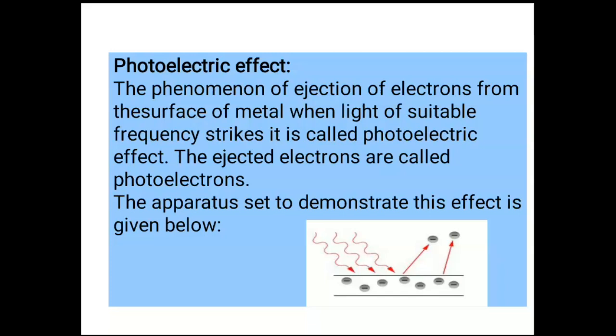The apparatus set to demonstrate this effect consists of a tube having two electrodes: a cathode (negative) and an anode (positive). On the plate of the cathode, light of suitable frequency is allowed to fall. The two electrodes are connected with a battery, so when light falls, electrons are knocked out and travel towards the anode which detects them. These electrons are called photoelectrons.